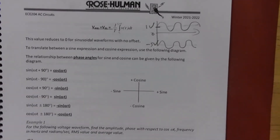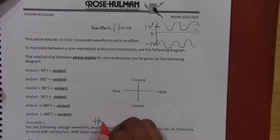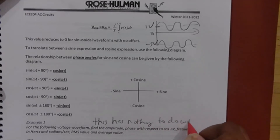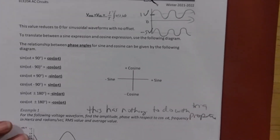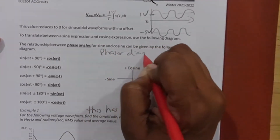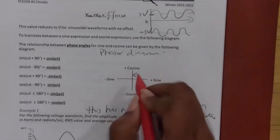Phase angles — this diagram I use a lot in class for translating between cosine and sine. The first thing to understand is it has nothing to do with trig identities. It's a phasor diagram to help relate sine and cosine. Specifically, if I have a sine wave and I want to write it as a positive cosine, I add 90 degrees.